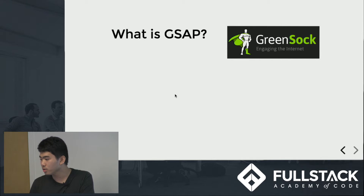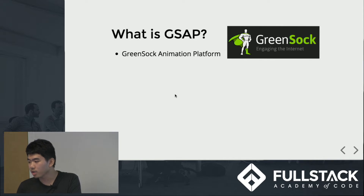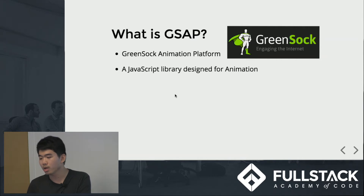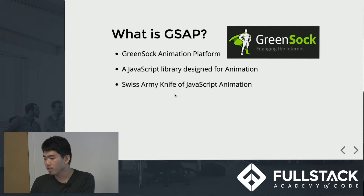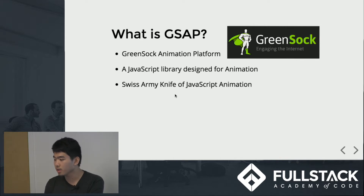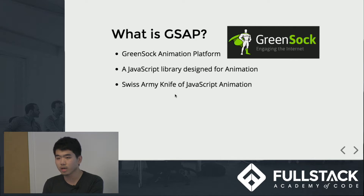Next, I want to introduce the library called GSAP. It stands for Green Sock Animation Platform. It's a JavaScript animation library especially designed for animations. You can think of it as a Swiss Army knife of JavaScript animation. GSAP can animate anything JavaScript can touch, including CSS properties of DOM elements and canvas objects.